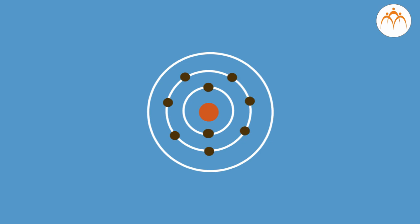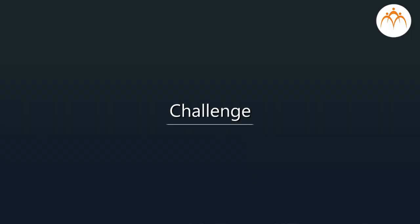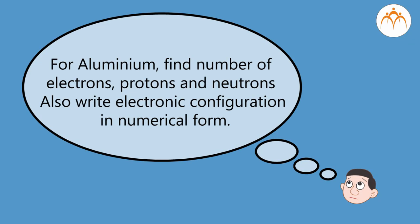Subatomic particles: electrons are 1800 times lighter than hydrogen atom and are revolving in shells around the nucleus. Now answer the following question: for aluminum, find number of electrons, protons and neutrons. Also write electronic configuration in numerical form.